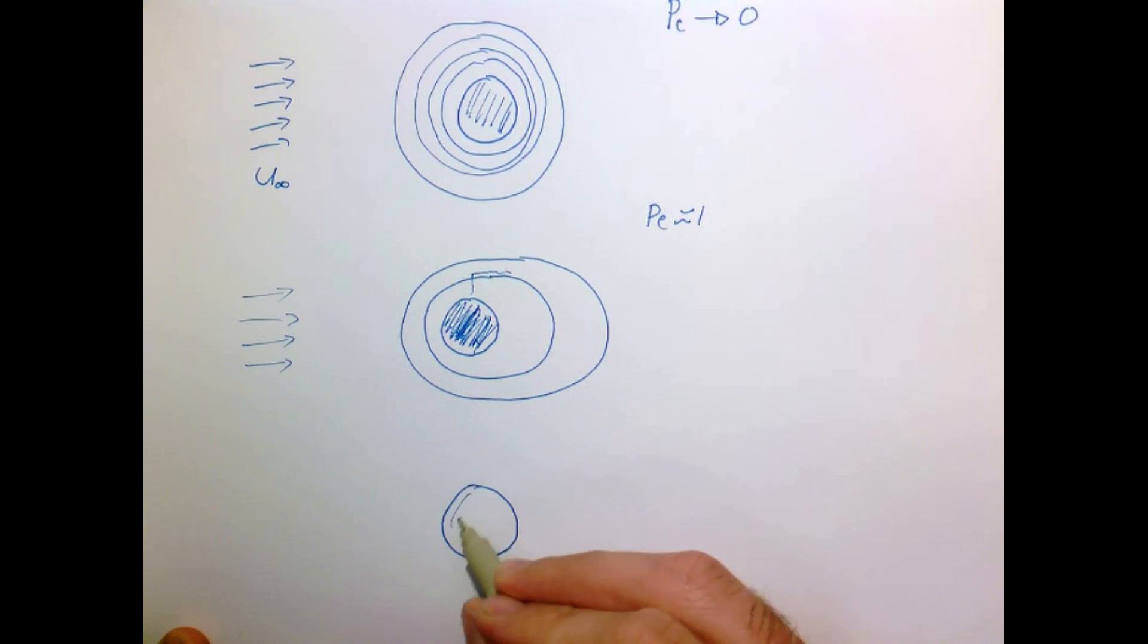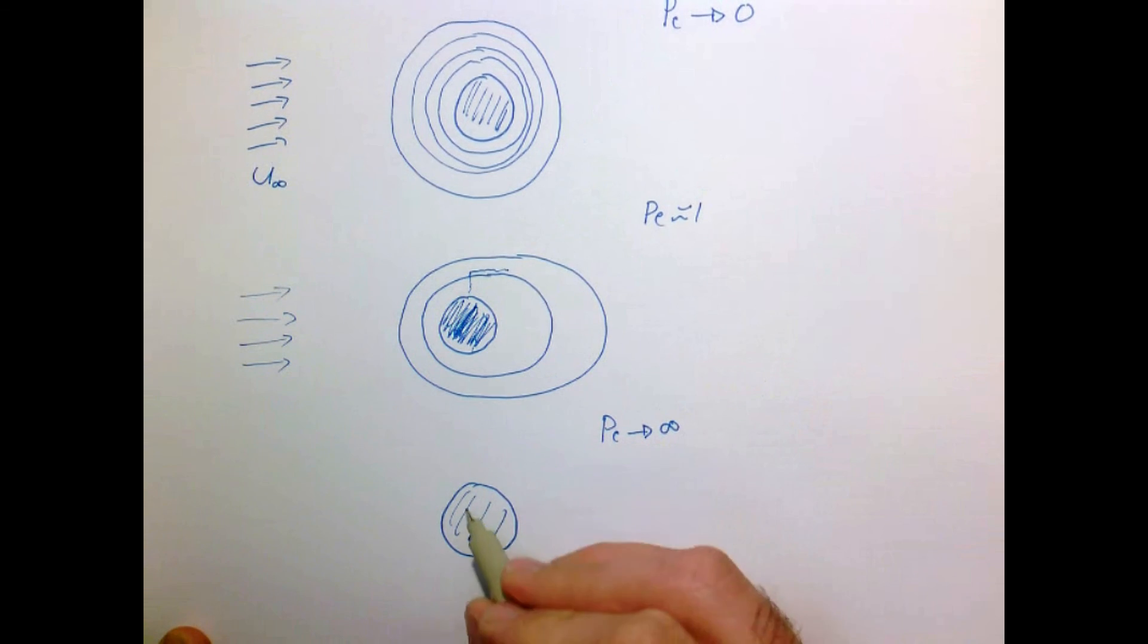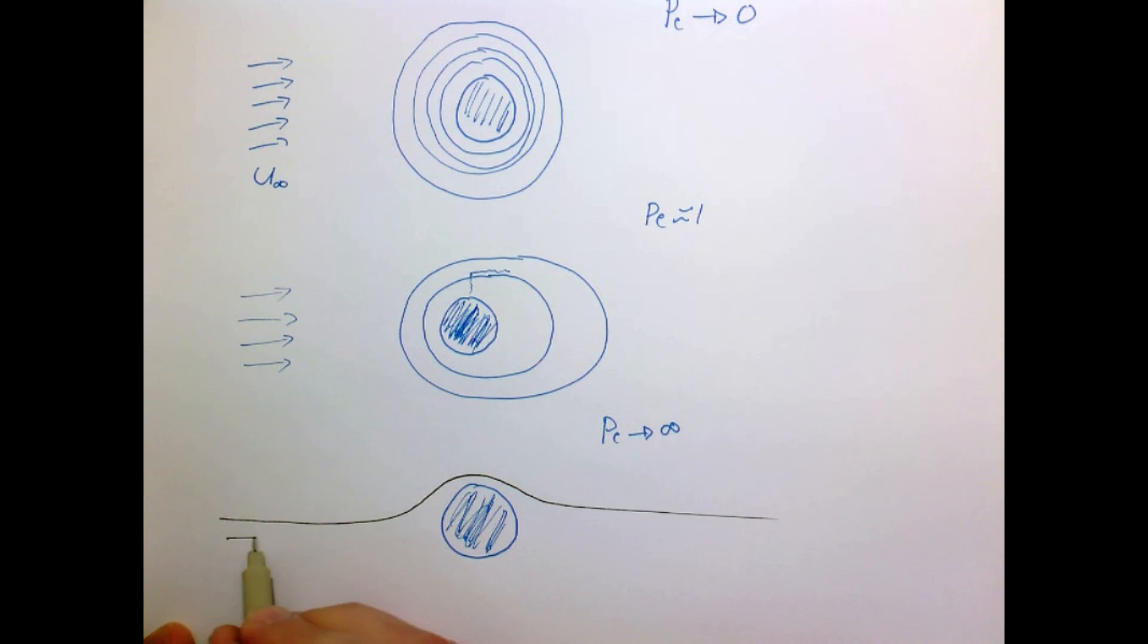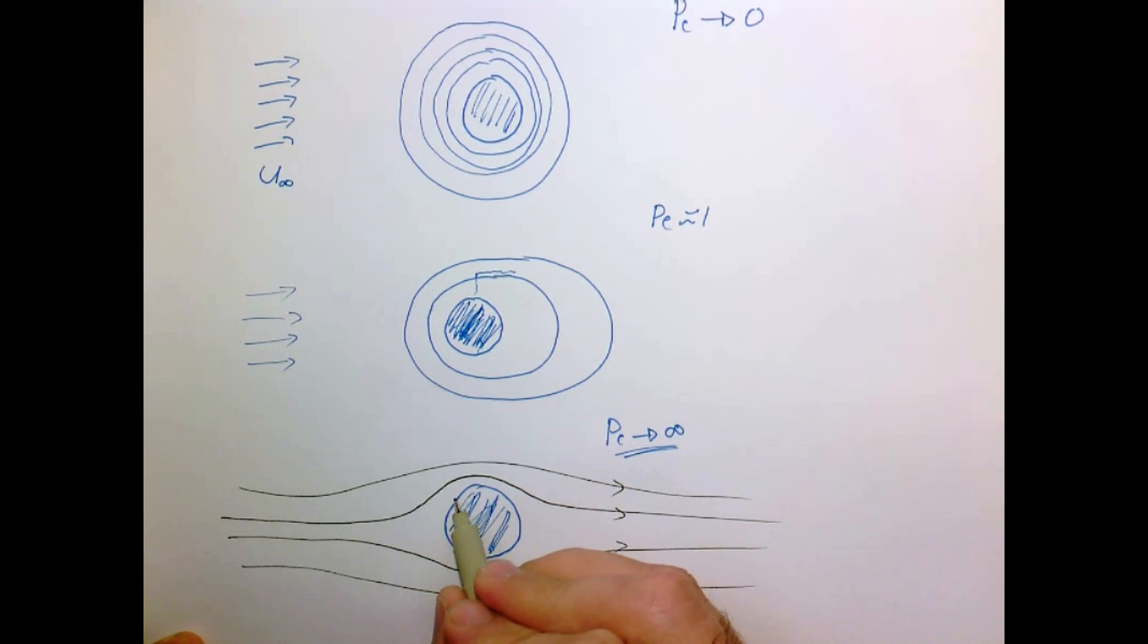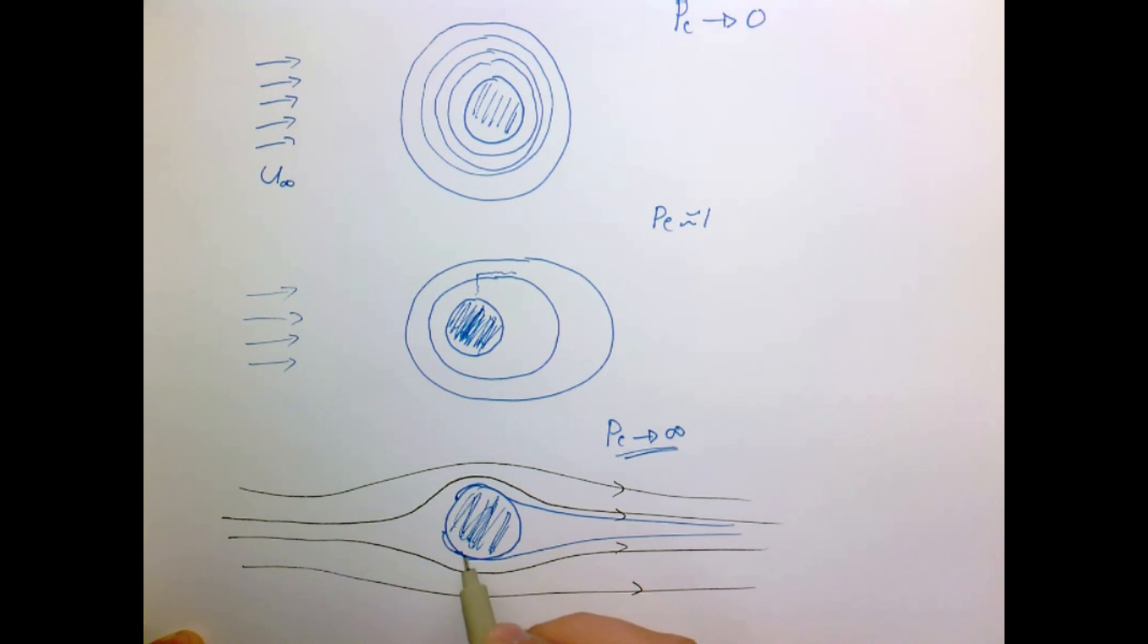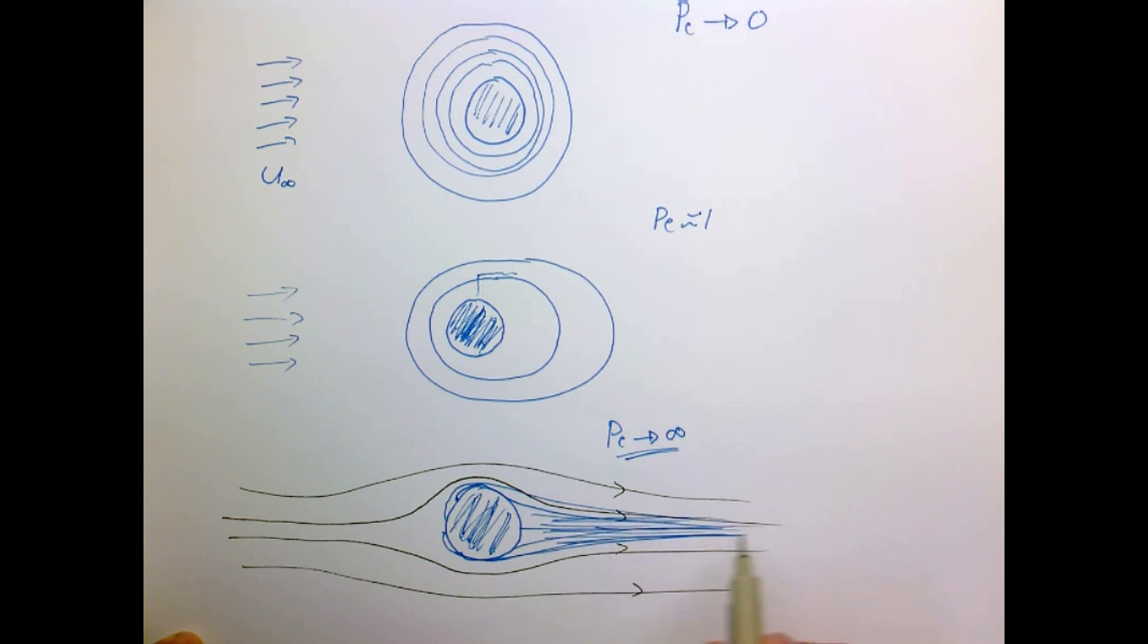If we go to the other extreme limit where the Peclet number is going off to infinity, where convection dominates and there's basically no diffusion, our flow field would follow those kind of lines. In the Peclet number infinite case where diffusion is relatively weak, once a molecule makes its way out into the fluid, it's just carried around and out the back. Everything that makes its way out is swept around, so our concentration is in a thin wake behind it. There's no possibility that something can diffuse upstream because it'll just be pushed back and carried away with the flow. This is the transition as we move from something that's diffusion dominated to convection dominated.